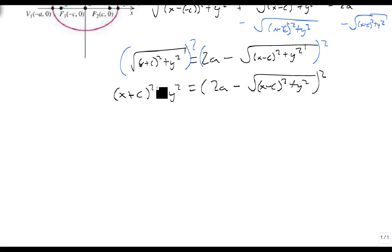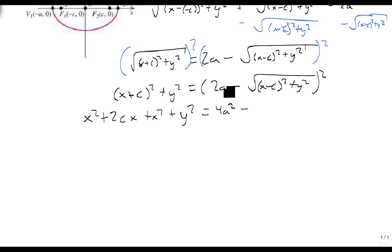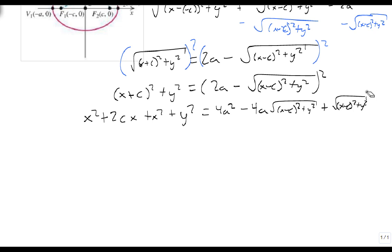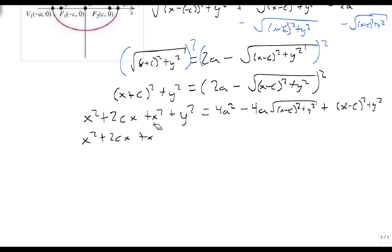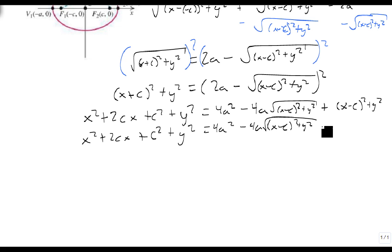We're going to use the perfect square trinomial twice. This gives us x² + 2cx + c² + y² equals 4a² — the square of the first term — minus 4a times the square root of (x − c)² + y² — twice the product of the terms — plus (x² − 2cx + c² + y²), since the square and square root cancel on the last term.